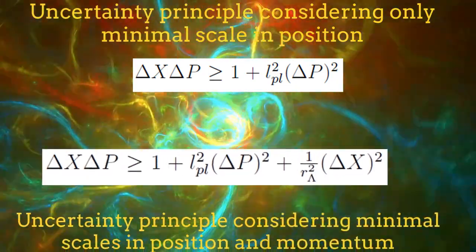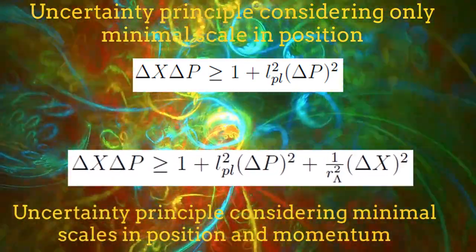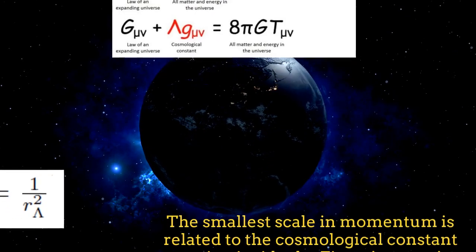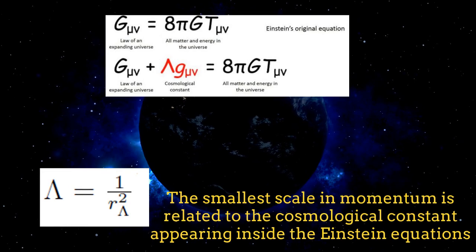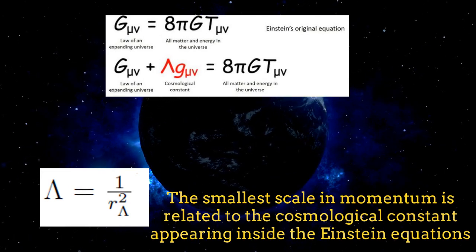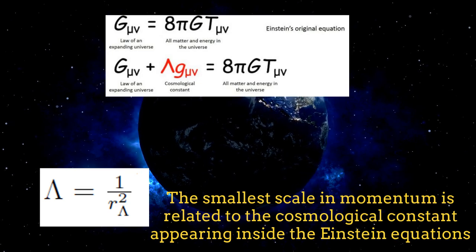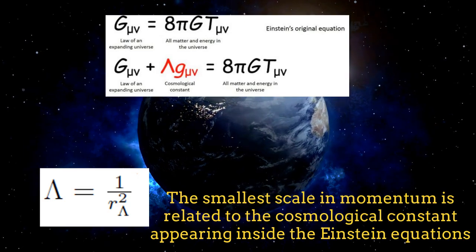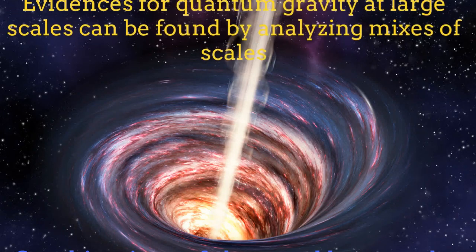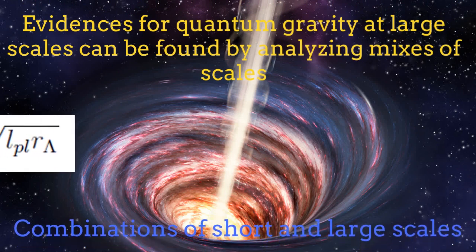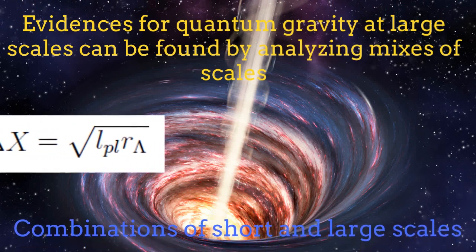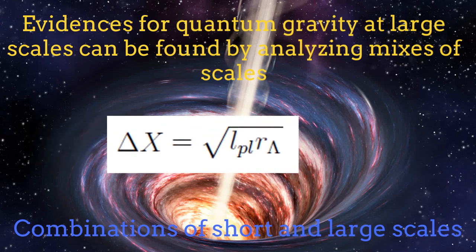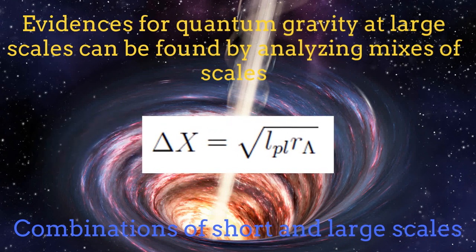The additional term appearing on this modified principle is a term attributed to quantum gravity. Further extensions also include another term which takes into account a minimal scale in momentum. Interestingly, it comes out that the smallest scale in momentum might be connected with the cosmological constant, the constant that we have to introduce inside the Einstein equations in order to obtain the accelerated expansion of the universe. Then from expressions like the generalized uncertainty principle and more rigorous equations, the mixes which result from the Planck scale, the cosmological constant scale, and other scales might help to find indirect evidences of quantum gravity at large scales.